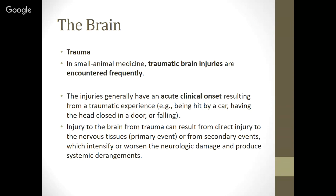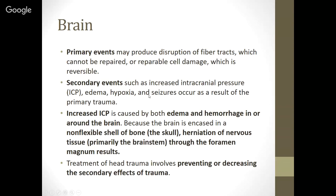Any injury to the brain from trauma can result from direct injury to the nervous tissues — called the primary event — or from secondary events, which intensify or worsen the neurologic damage and produce systemic derangements. These secondary events are often due to inflammation or something that happens after the primary event. Primary events may produce disruption of fiber tracts, which cannot be repaired, or reparable cell damage, which is fortunately reversible. If the neuron itself, where the nucleus is, is damaged or lost, we can't repair that. But if it's the dendrite or the axon, we might be able to reverse and repair that. That's why people with nerve damage can eventually get some function back.